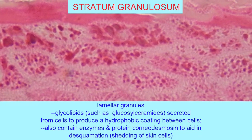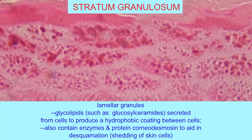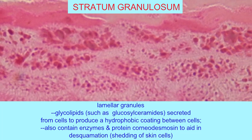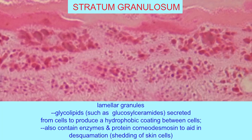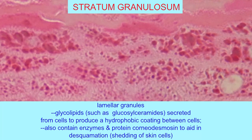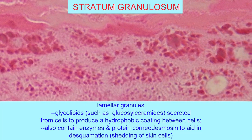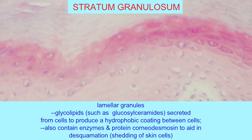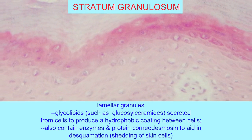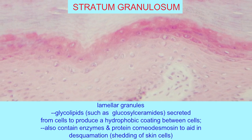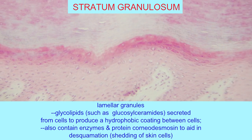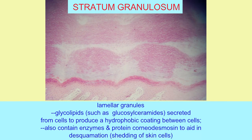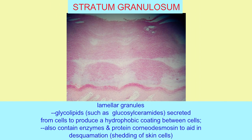And the lamellar granules, which contain glycolipids that are secreted from the cells and thus produce a hydrophobic coating between epidermal cells as they reach the stratum corneum. They also contain enzymes and proteins which aid in desquamation, or the shedding of the skin cells, at the superficial layers of the stratum corneum.